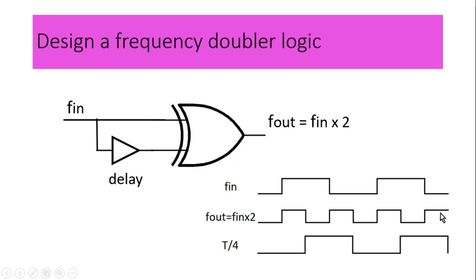From the waveform also you can see that this is fin which is input clock frequency and this is delayed version of this input clock. Then we are applying both the signals to this XOR gate and finally you get fout which is multiplied by two of the input clock frequency.